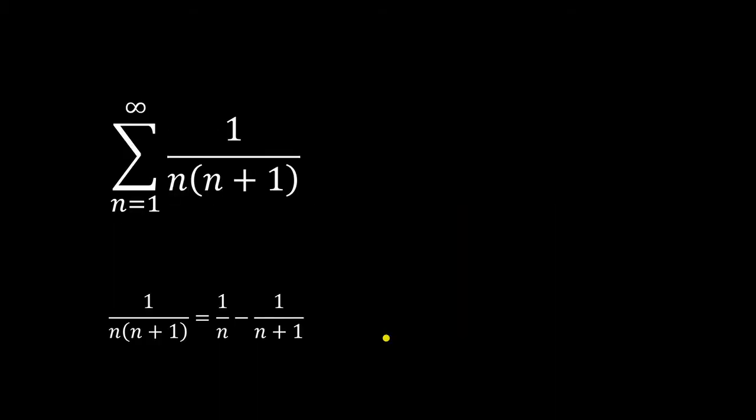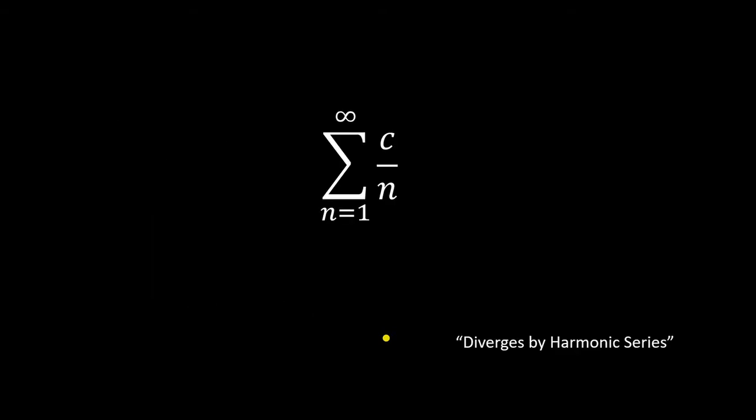A quick note: sometimes you might see telescoping series written differently. This is actually the same series we saw before, just in a different form. In this case, you will have to use partial fraction decomposition to split them up into a fraction minus a fraction, or you might have to use another one of the tests. Next, the harmonic series — this is a constant over n. If you have an infinite series that is a constant over n, you immediately know that it diverges. End of story. Harmonic series will diverge.